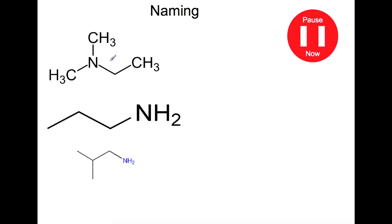For these examples, I want you to first classify them as primary, secondary, or tertiary, and then try naming them. In this first example here we have a nitrogen with three alkyl groups attached to it, so this is a tertiary amine. This one here is a nitrogen with one alkyl group attached, so it's a primary amine, and so is the last one.